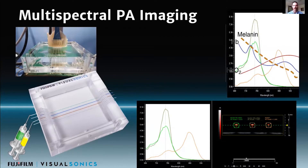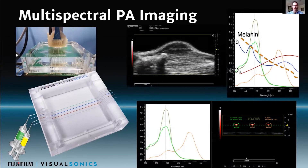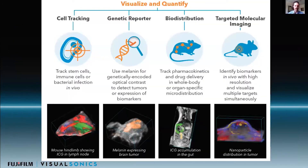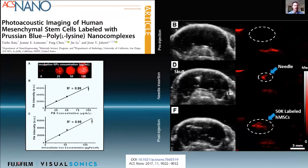Here's a tumor example: we can overlay oxygen-saturated and deoxygenated blood, and then there are nanoparticles injected IV into the animal, and we can overlay and unmix all of those different optical signals from each other. There's a whole range of applications here from cell tracking, genetic reporter imaging with expression of melanin, looking at biodistribution of drugs, and then some targeted molecular imaging.